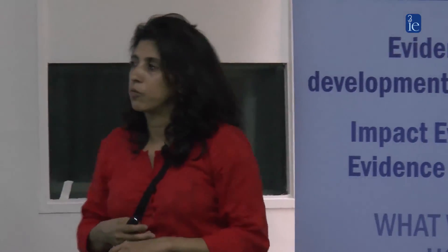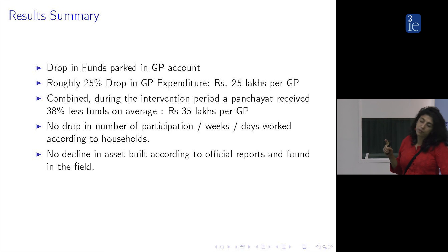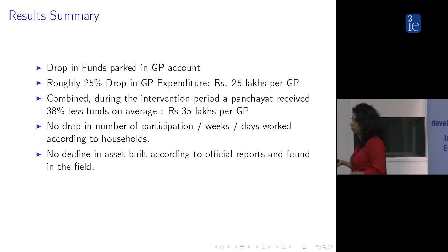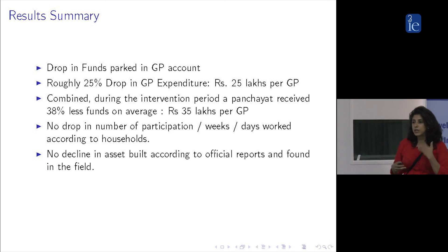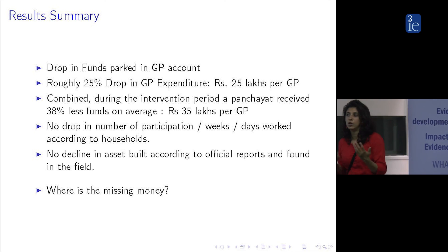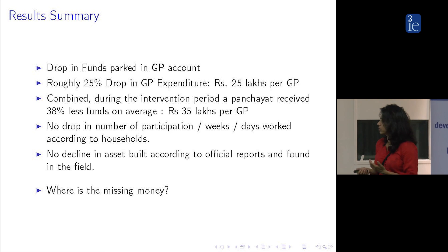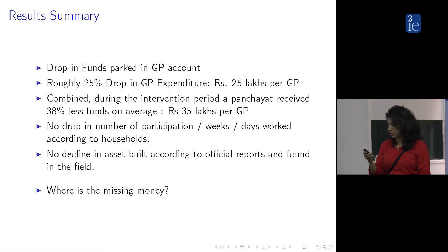To summarize: we see a drop in the funds parked in the GP and roughly a 25% drop in GP expenditure. During the intervention period, the treatment GP received roughly 38% less funds on average. We see no drop in the number of participating households from our survey, and when we trace the assets, we don't find a change there either. Given we're not seeing any change in work or assets, a very reasonable question is: where did this missing money go?